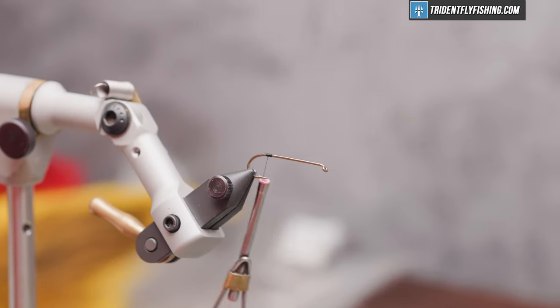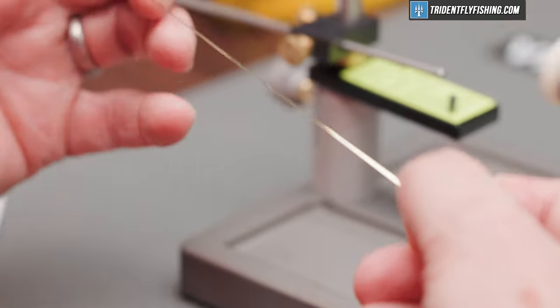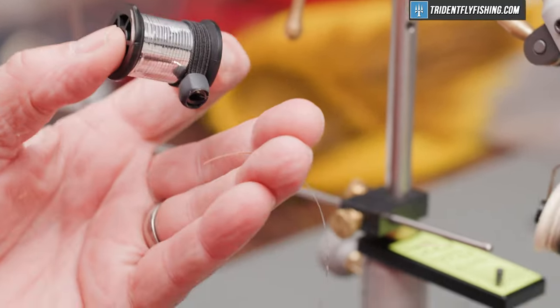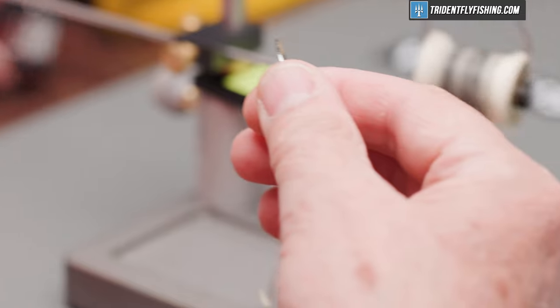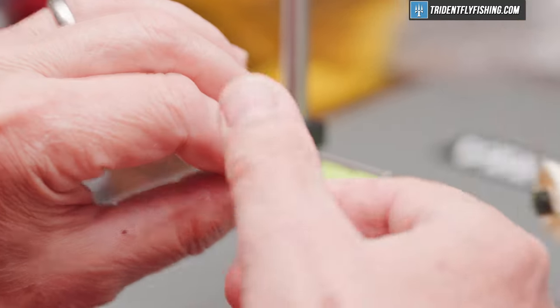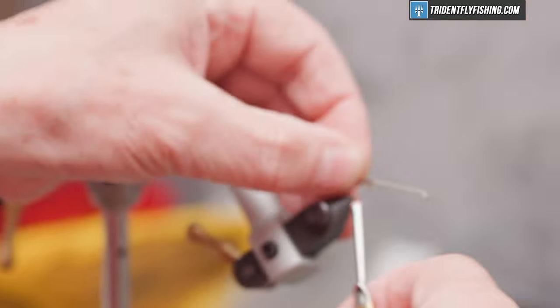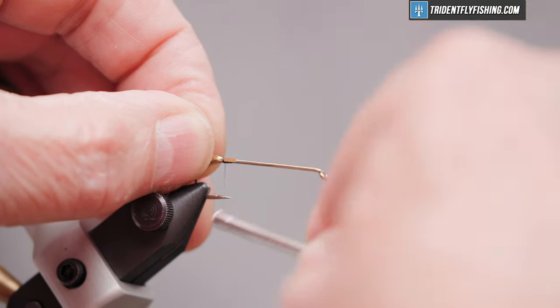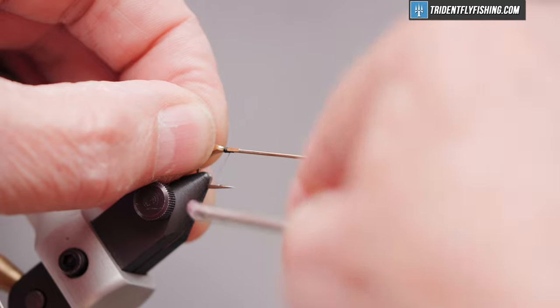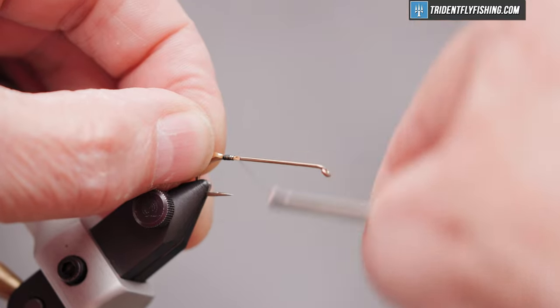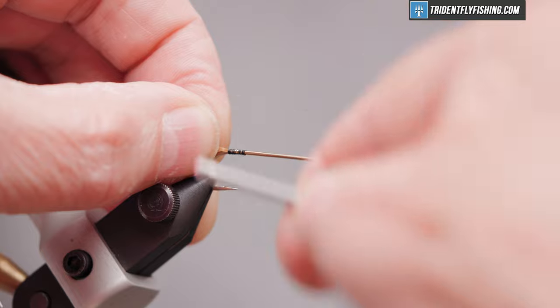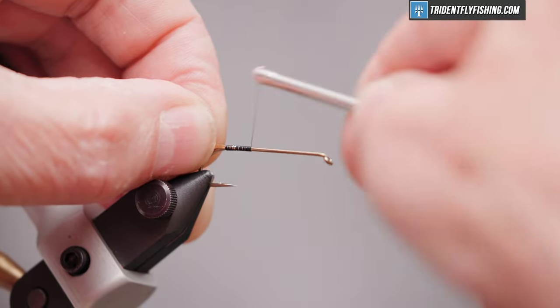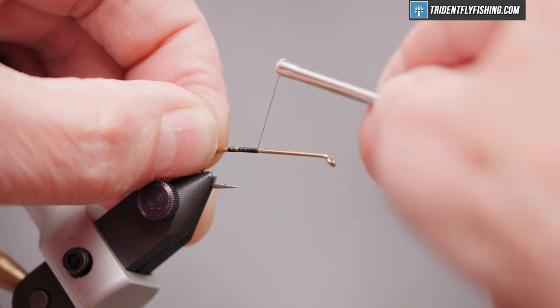The rib is uni mylar silver gold size 14. Cut off a piece here. We want the silver side to show out, so we'll tie it in with the gold side facing out. We want nice tight even turns so the tinsel lays down flat for us.